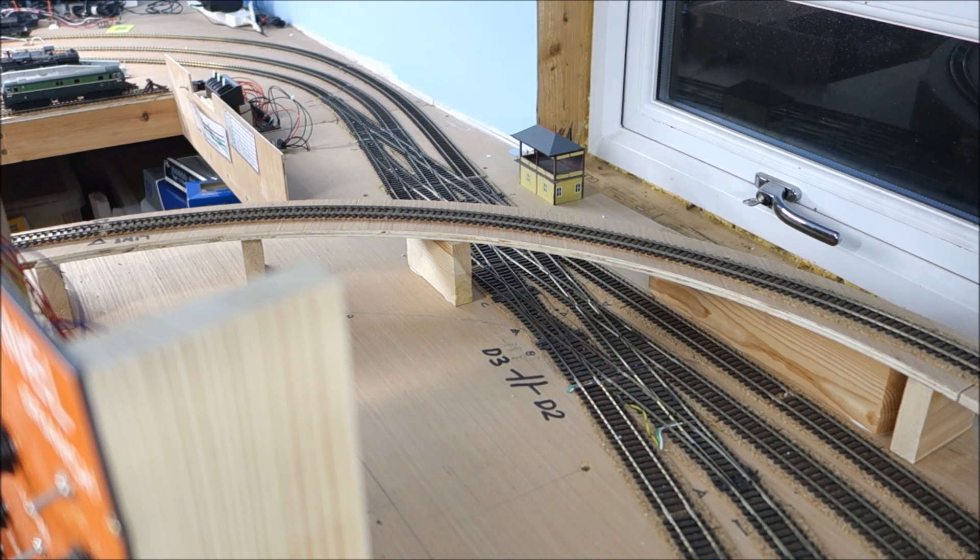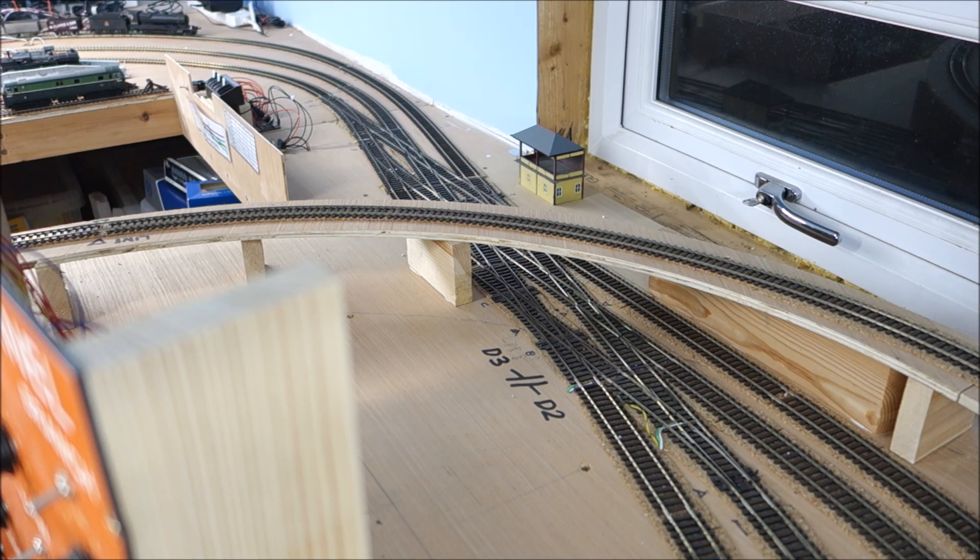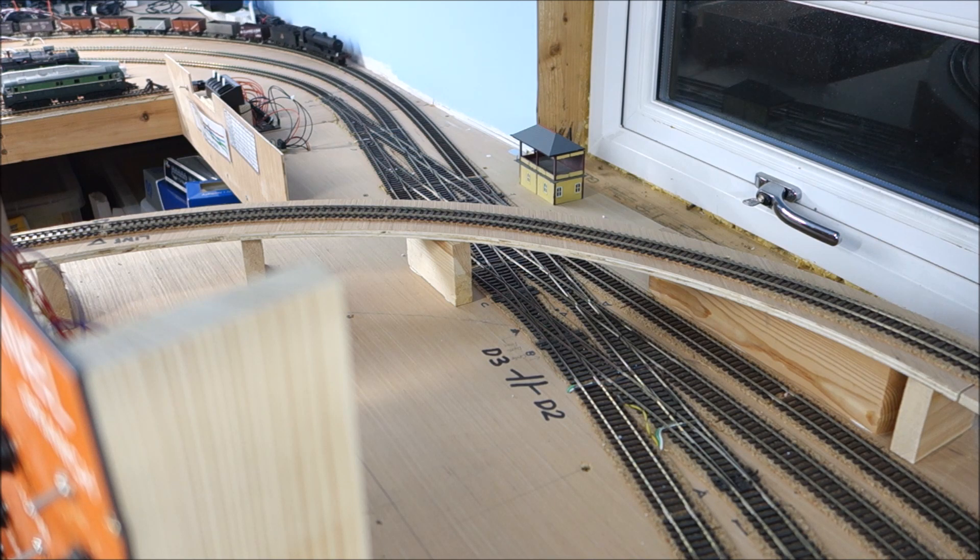And here is what it looks like in real life. And we can see the coal train is going to come round on the up main, that's the far right of these tracks, the red one in our diagram.